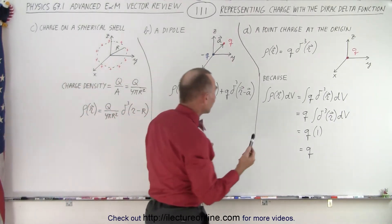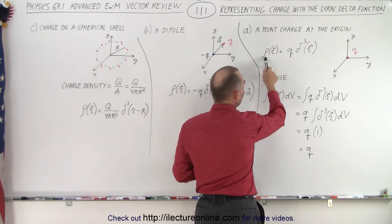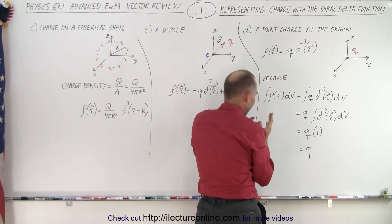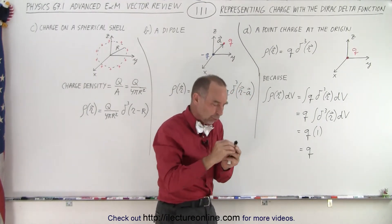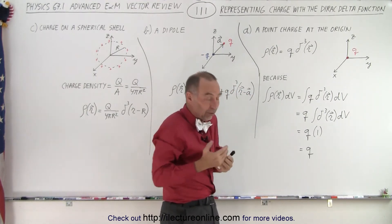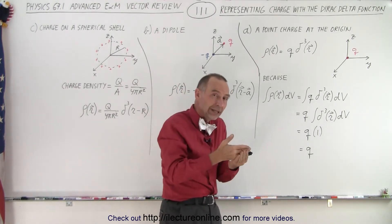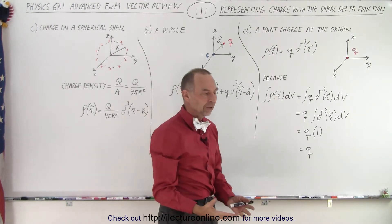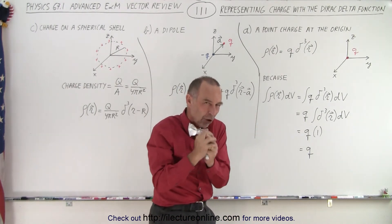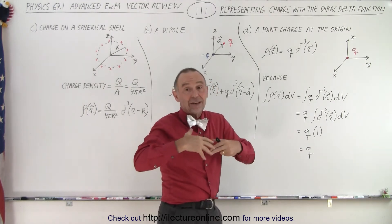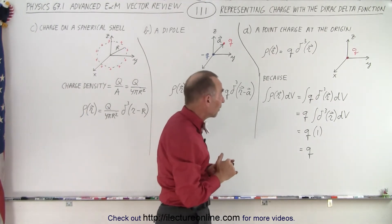The first one is straightforward: we have the density of the charge as a function of r. We realize that there's no charge anywhere but at the origin where x, y, and z are zero. Therefore we need a Dirac delta function, which means there's charge at the origin and no charge anywhere else. Since all of the charge is located at the origin at zero volume, the density has to be infinite at that location — that's how we describe a Dirac delta function.